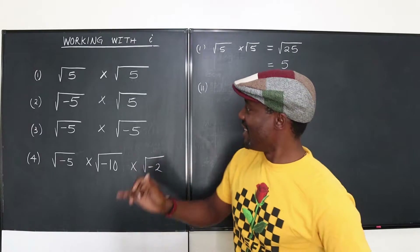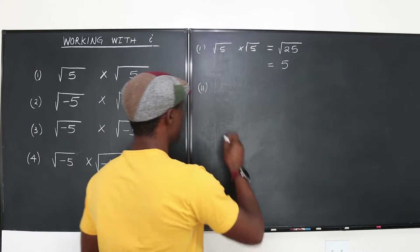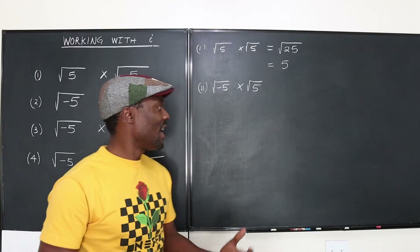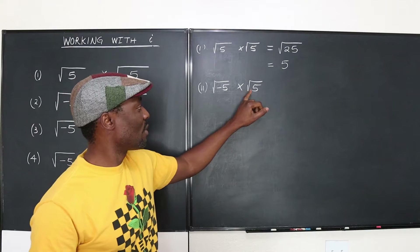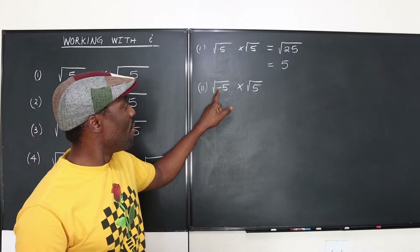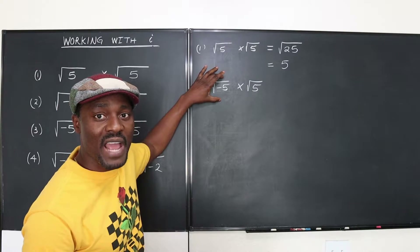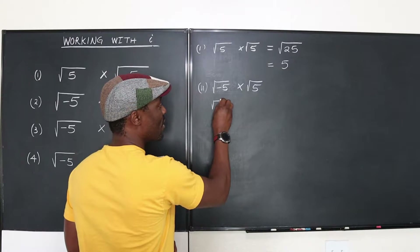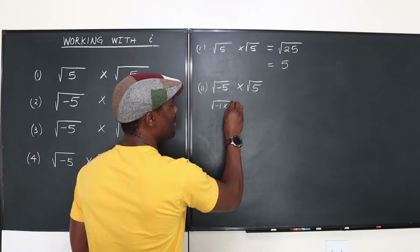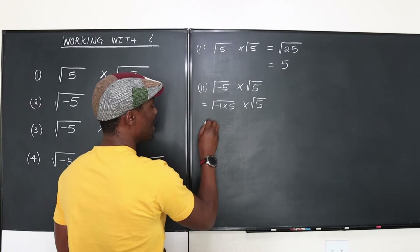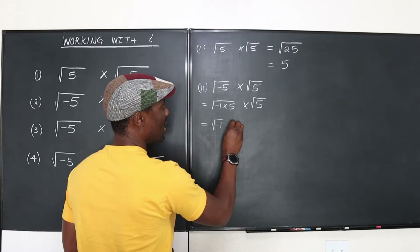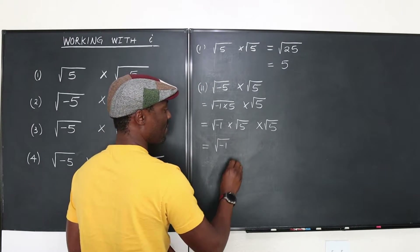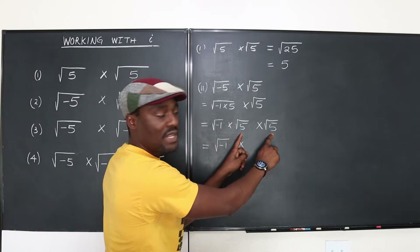Now for example 2: √(-5) × √5. You might be tempted to just multiply under the sign, and it would work here, but I want you to avoid that habit. Since we have a negative under the square root, this gives an imaginary output. So rewrite it as √(-1 × 5) × √5, which is √(-1) × √5 × √5.